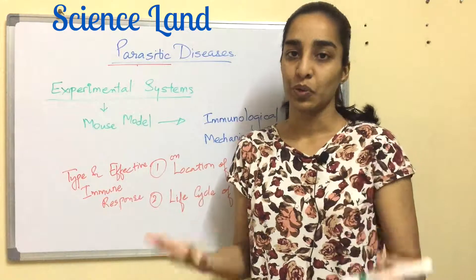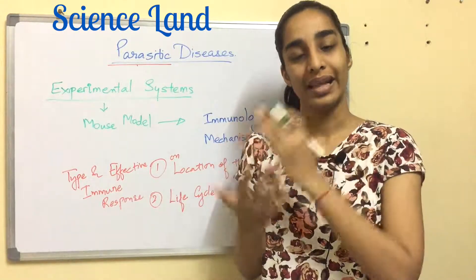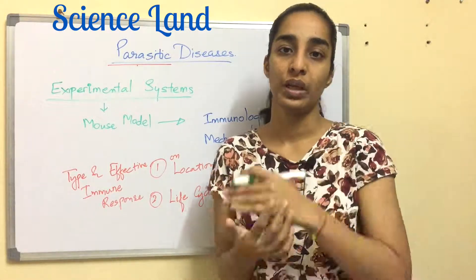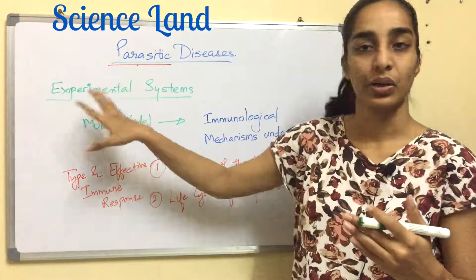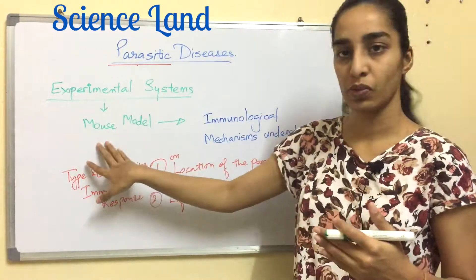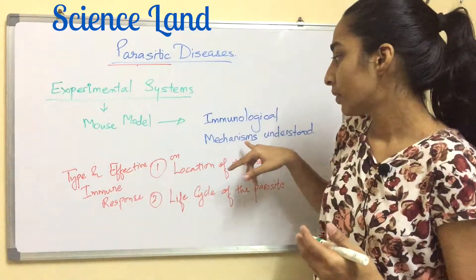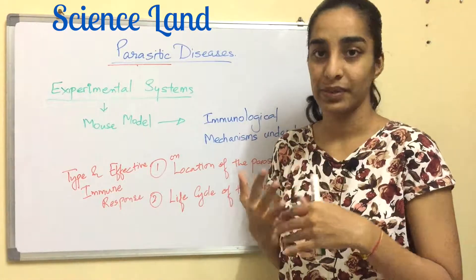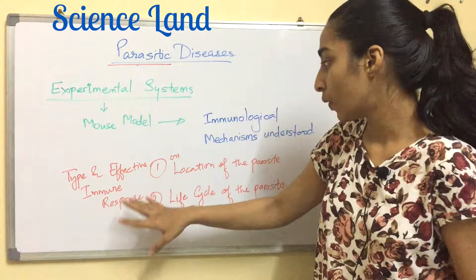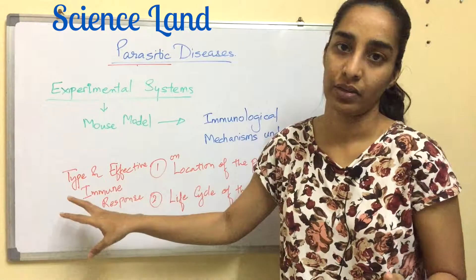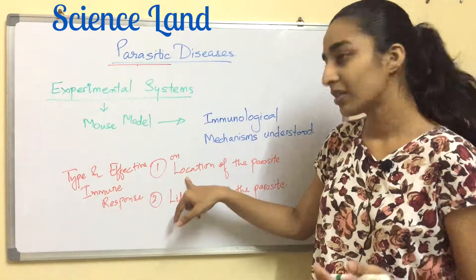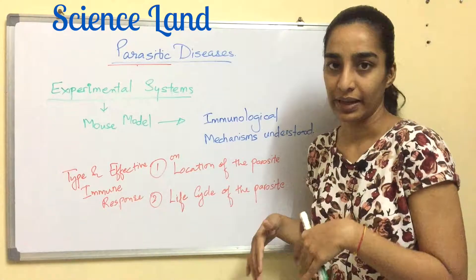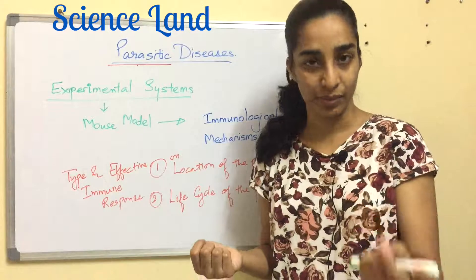Whenever there is a disease, it evokes an immune response. So against parasitic diseases, what is the mechanism of immunity? This can be studied using experimental systems — usually a mouse model is used — and you have different types of immune response based on how effective that response is. Two main factors affect the immune response: the location of the parasite in the human body, and the life cycle of the parasite.